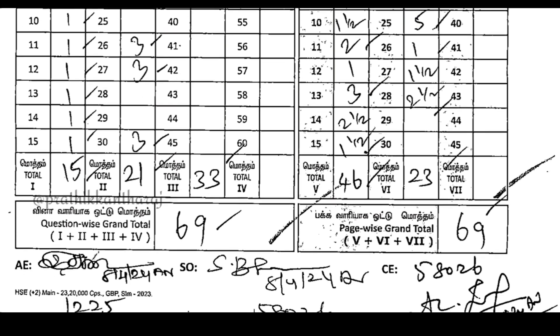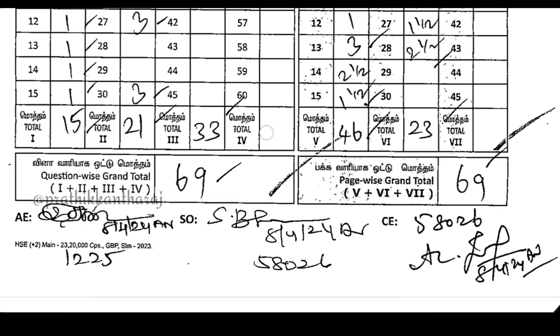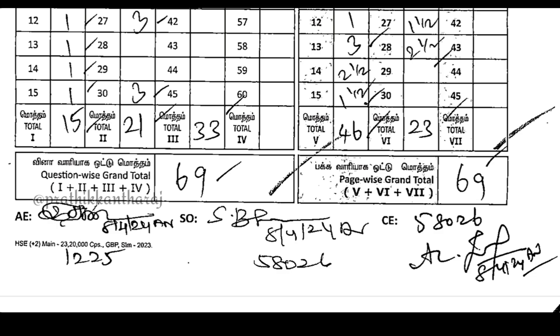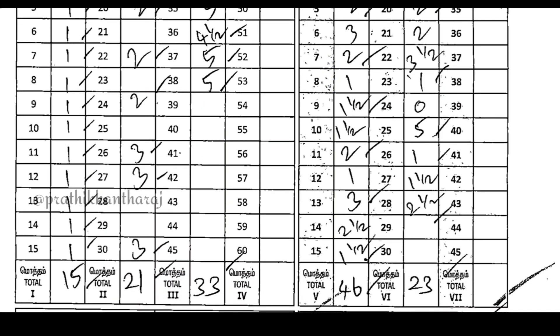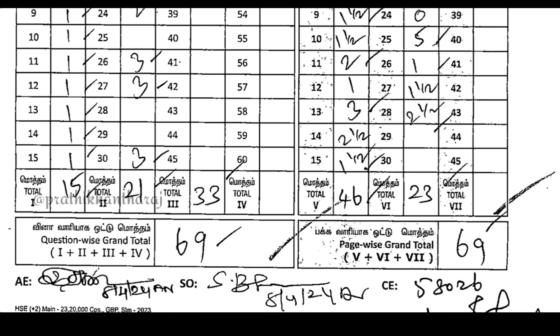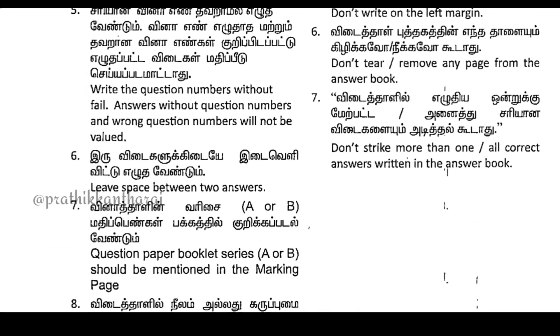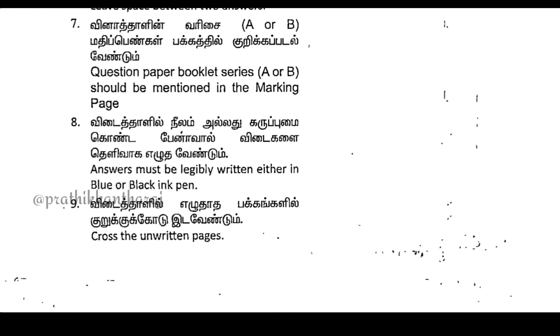In the previous videos, it was 69 out of 70 — one mark was cut out. Suppose if it is a half mark, in many cases unfortunately we will cut out the half mark. And if we cut out the half mark, we will talk about the PDF.